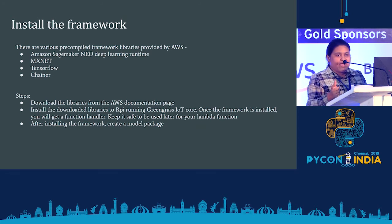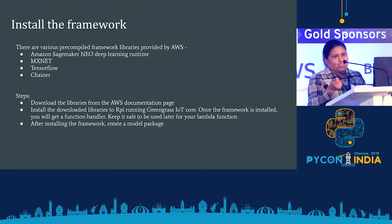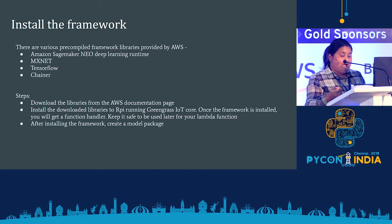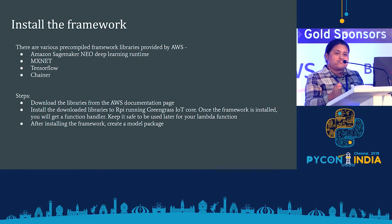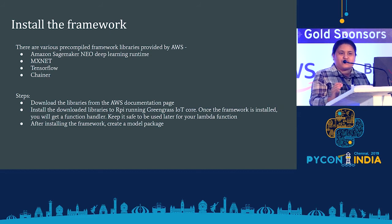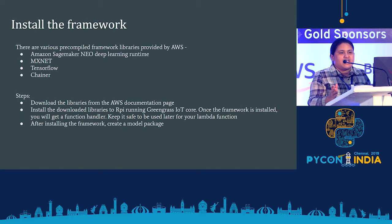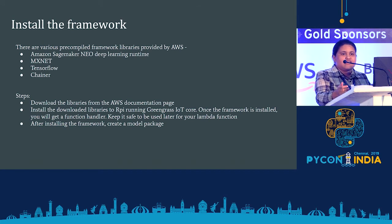Once the IoT Core is running on the Raspberry Pi, I had to do model packaging. There are various pre-trained libraries provided by AWS: Amazon MXNet, Amazon SageMaker Neo MXNet, TensorFlow, and Chainer. You can download these pre-trained models from the AWS documentation site. Once downloaded, you push it to your Raspberry Pi device via WinSCP or SFTP protocols, then install those pre-trained libraries on the device after configuring it with IoT Core.